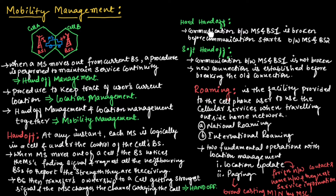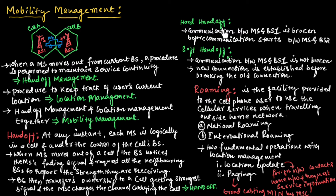Handoff is of two types: hard handoff and soft handoff. In hard handoff, the communication between the mobile station and base station 1 is broken before communication starts between the mobile station and base station 2. The connection to base station 1 is cut off first, and then the new connection to base station 2 is initiated. Because the transition is not smooth, it is known as hard handoff.